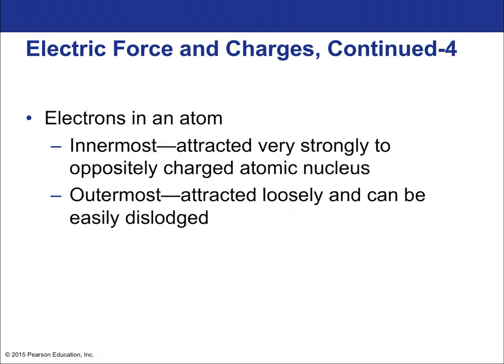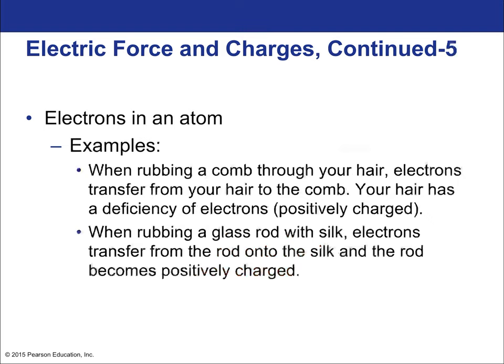Electrons in an atom: the innermost ones are attracted very strongly to the oppositely charged atomic nucleus, whereas the outermost ones are attracted loosely and can be easily dislodged. They're also shielded by the inner electrons, which repel them. For example, when rubbing a comb through your hair, electrons transfer from your hair to the comb, so your hair has a deficiency of electrons and becomes positively charged.